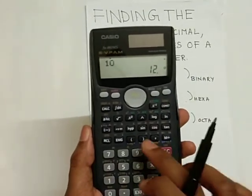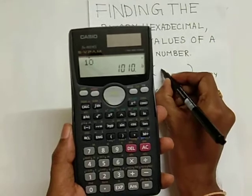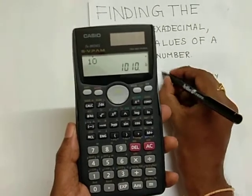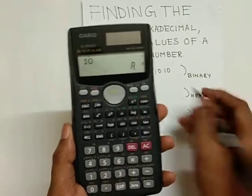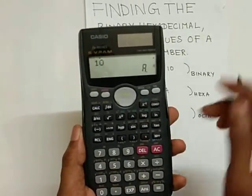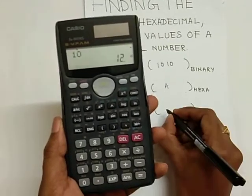The binary value for 10 is 1010, the hexa value is A, and the octal value is 12.